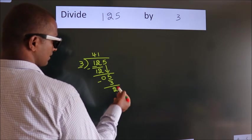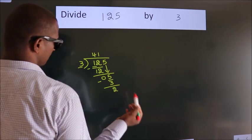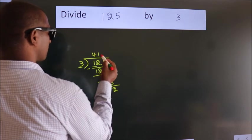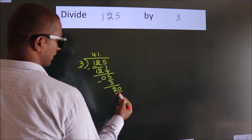After this, no more numbers to bring it down. So what we do is, we put dot take 0. So 20.